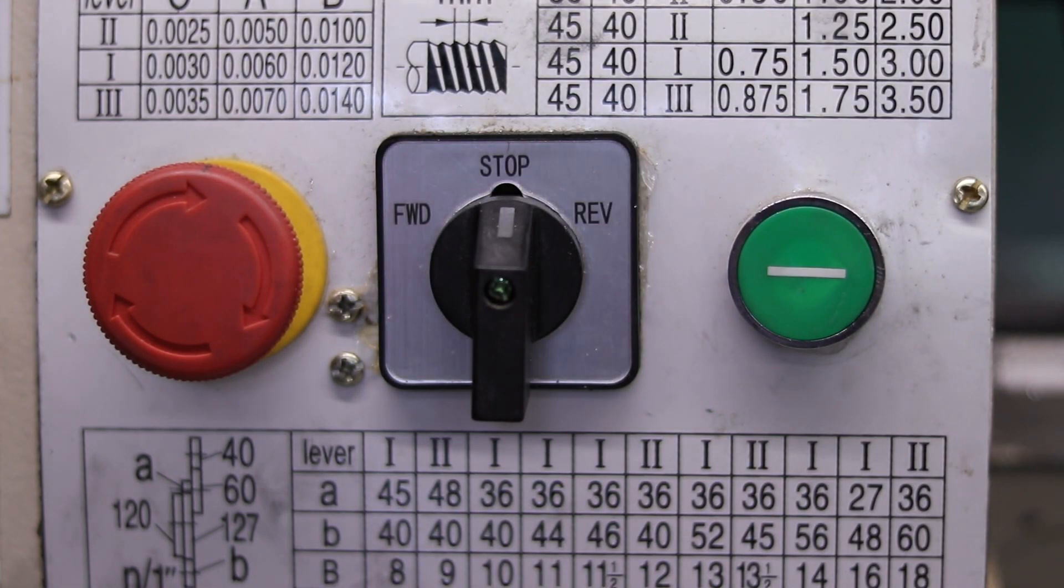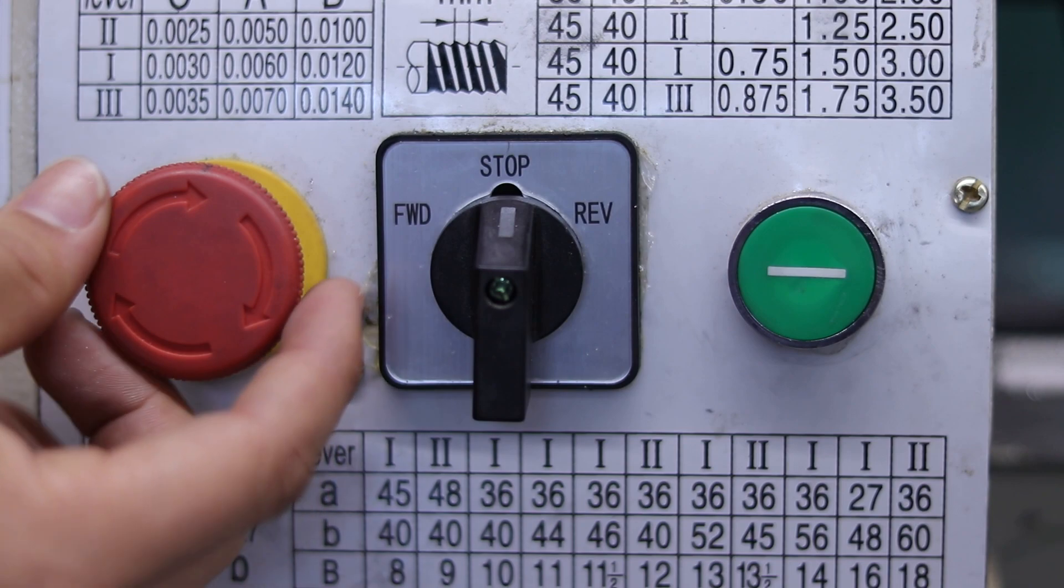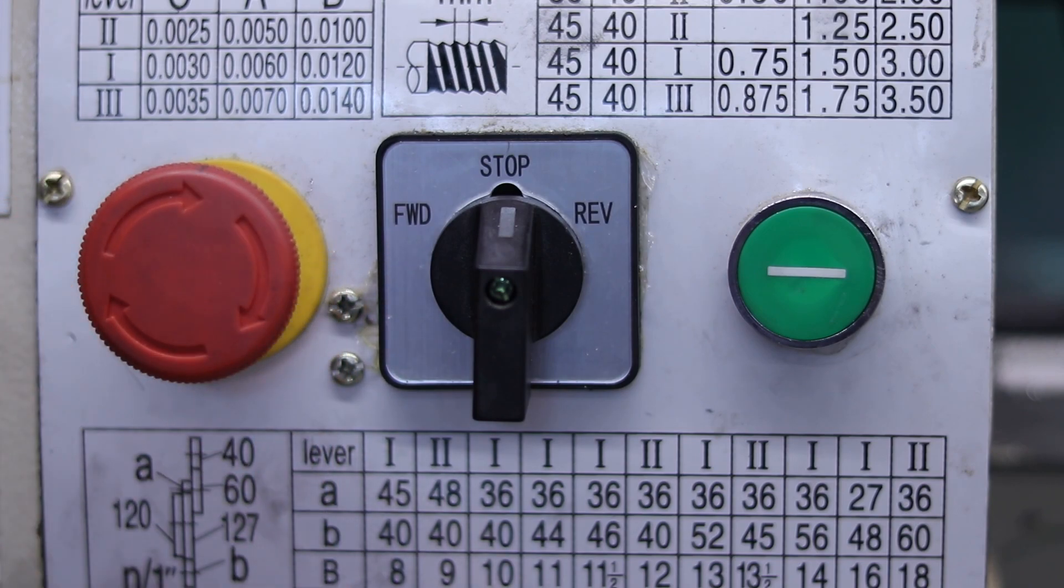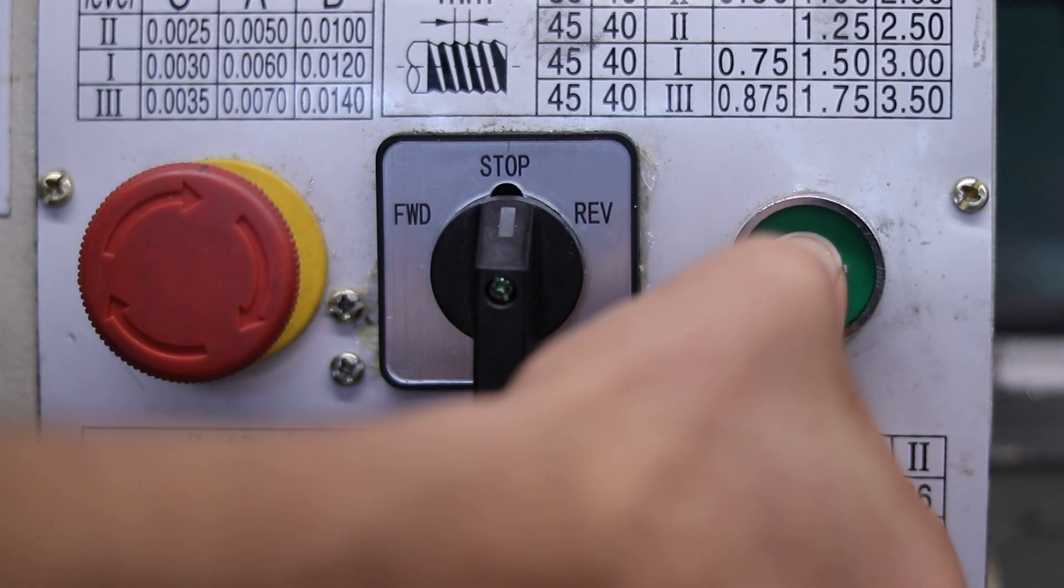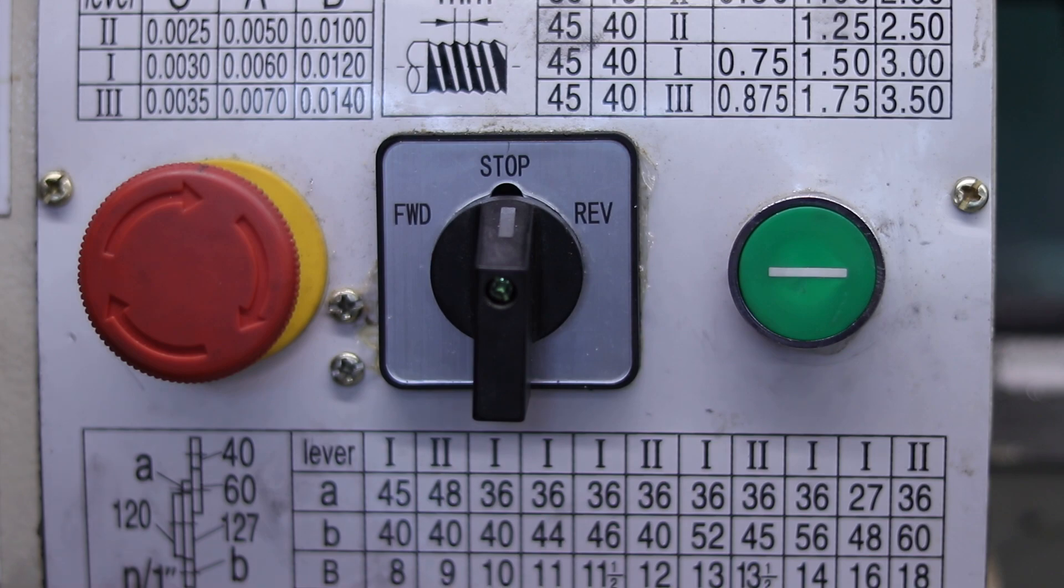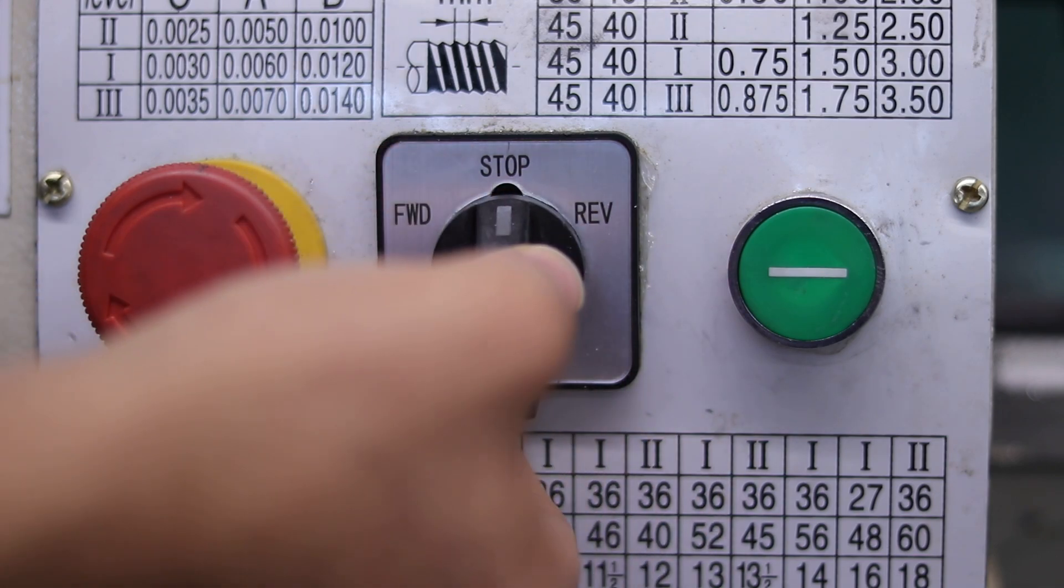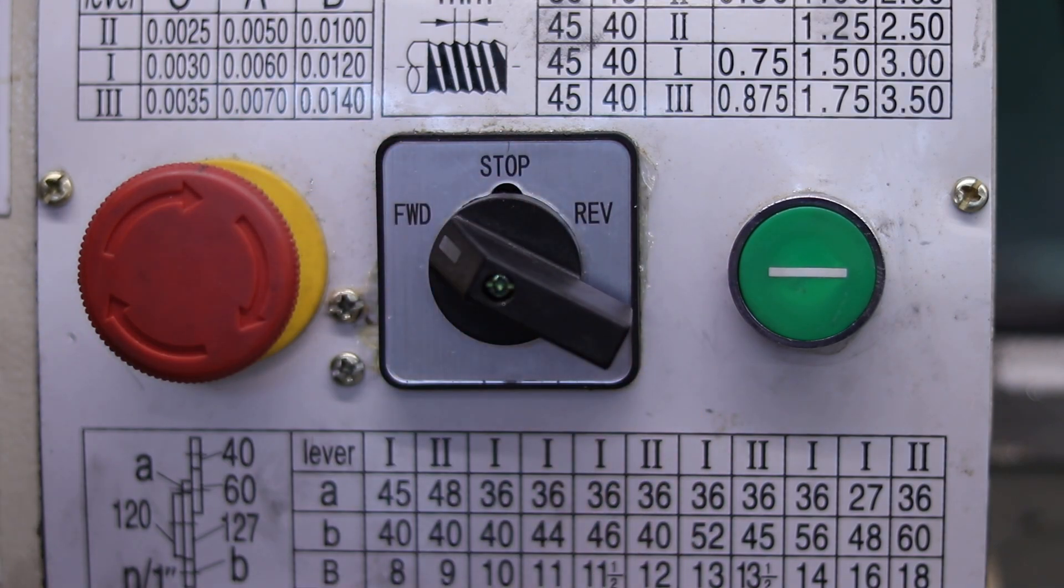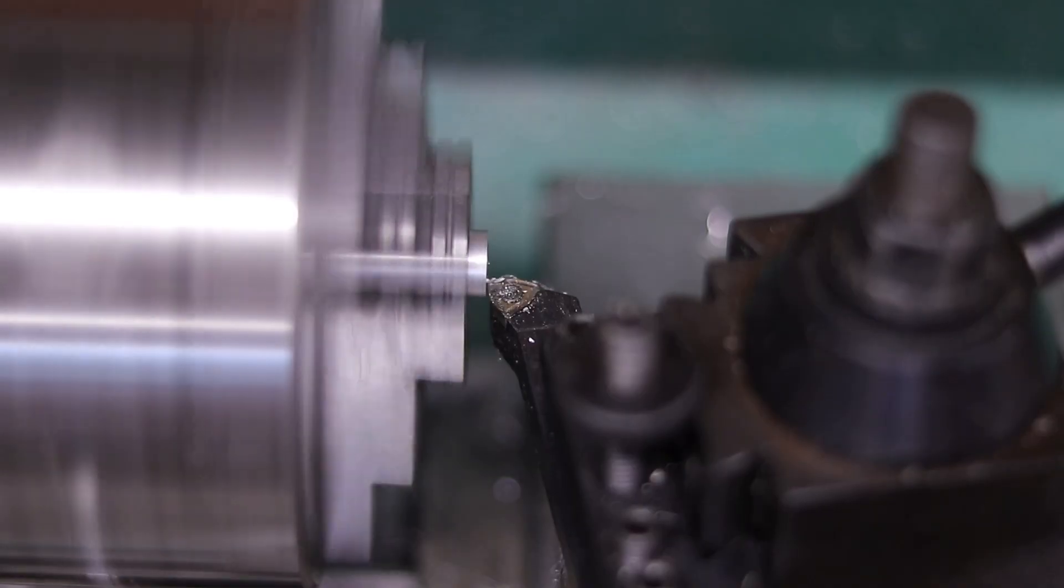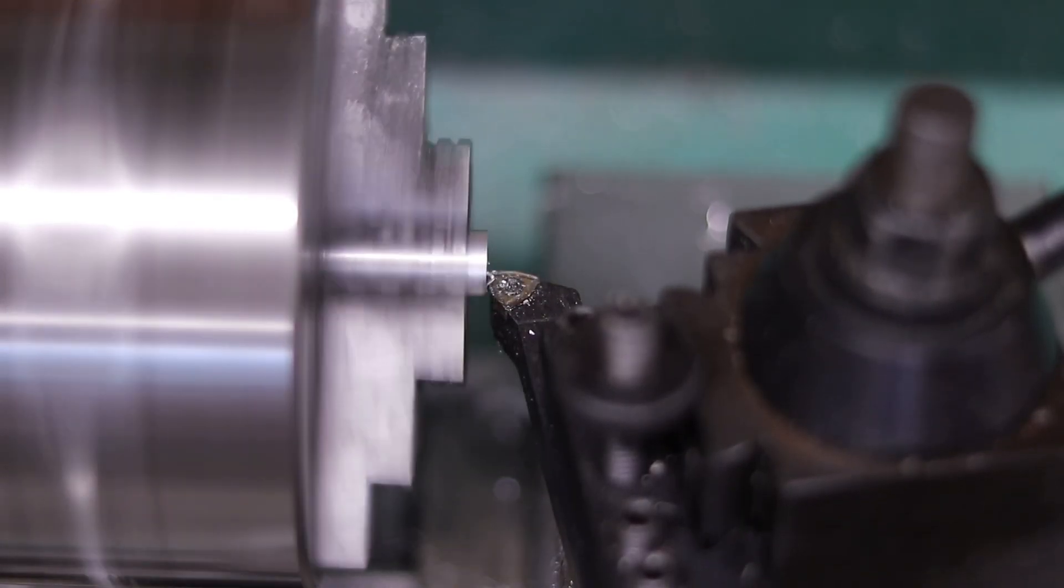On the control panel, verify that the switch is in the off position. Turn the red emergency stop button to the right until it clicks open. Press the green button to the right of the switch. Take one last glance to verify that there is nothing in the path of the chuck and that the chuck key is removed. Finally, turn the switch into the forward position and start the spindle. I'll continuously turn the middle knob to remove a small amount of material.